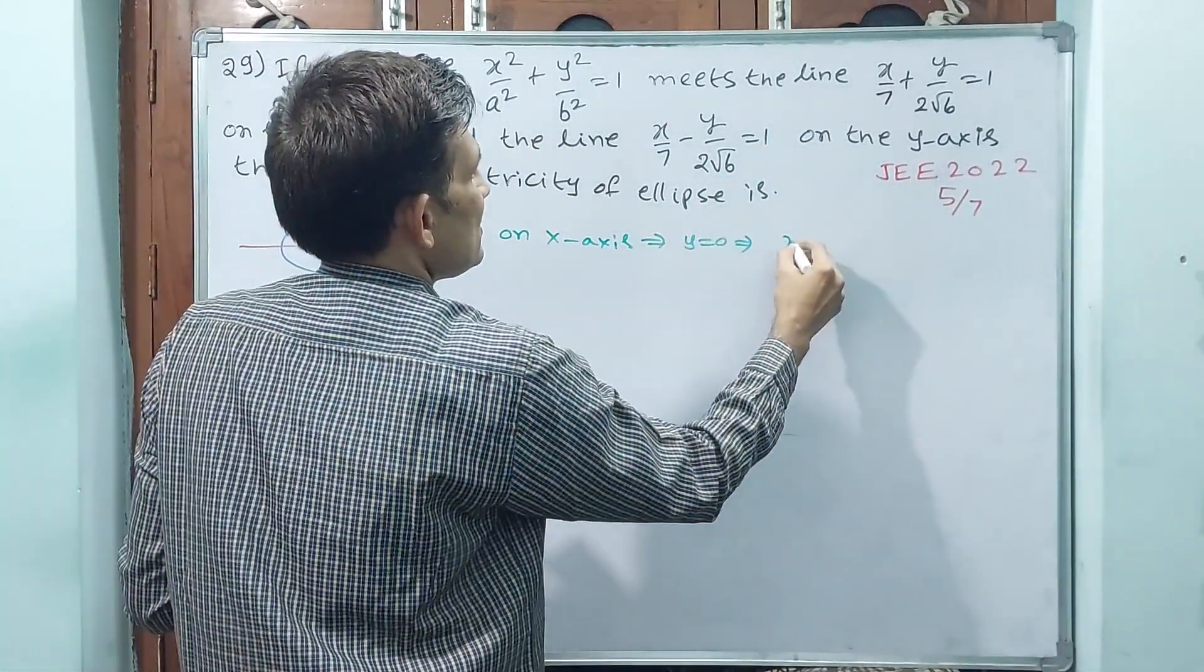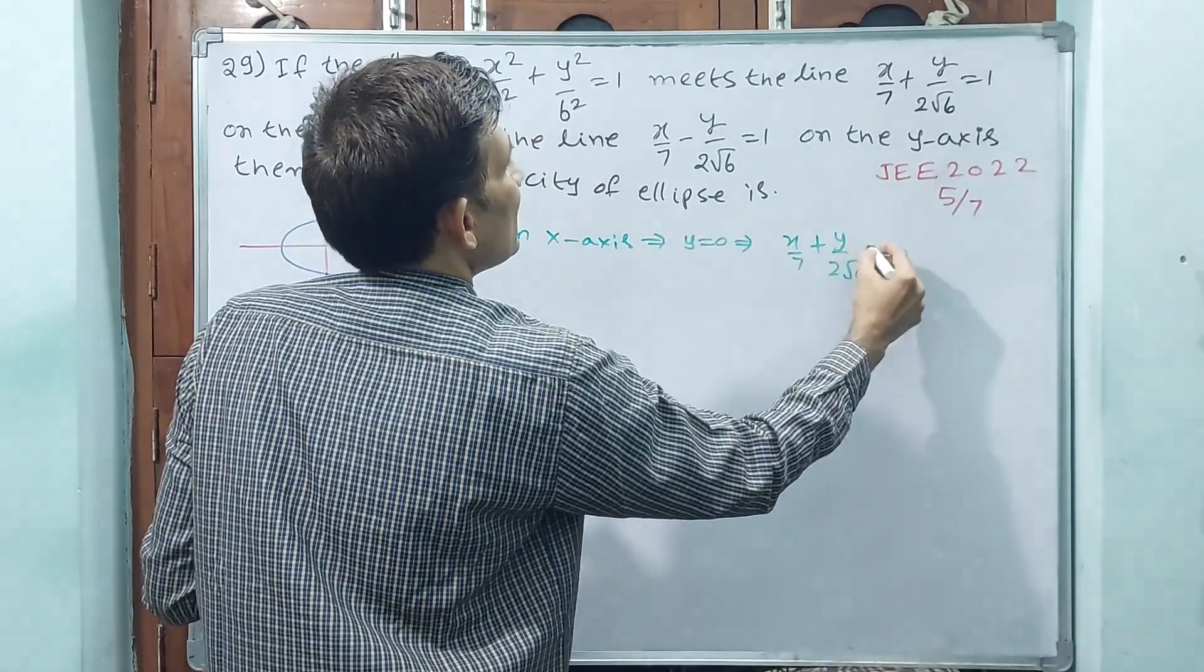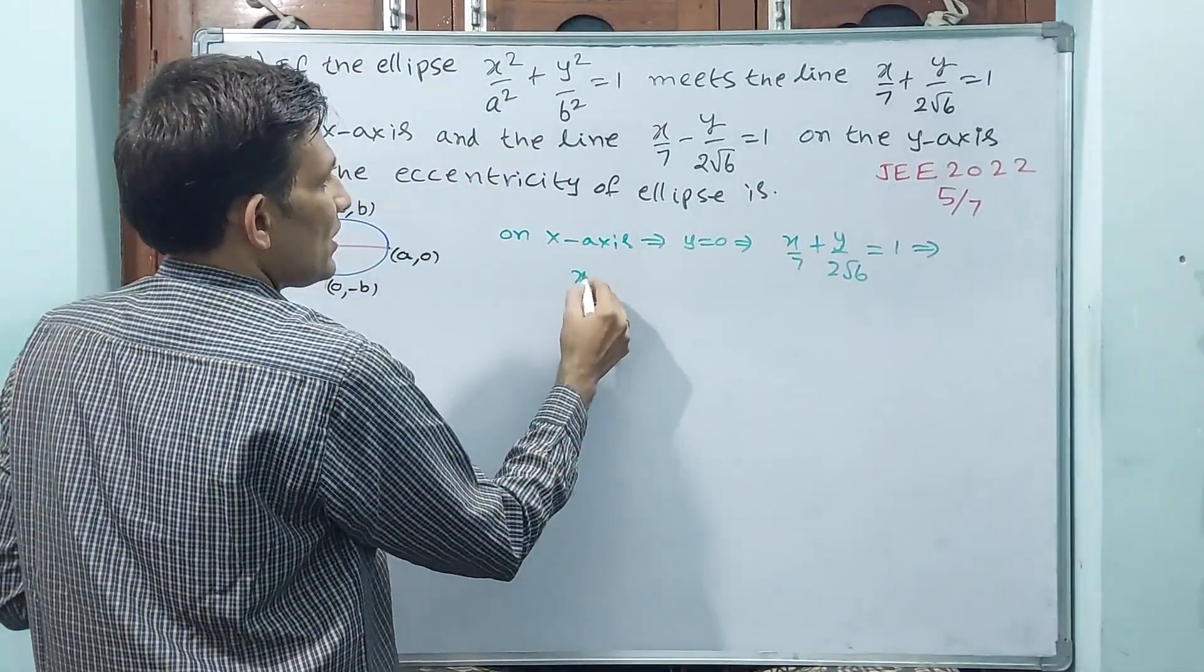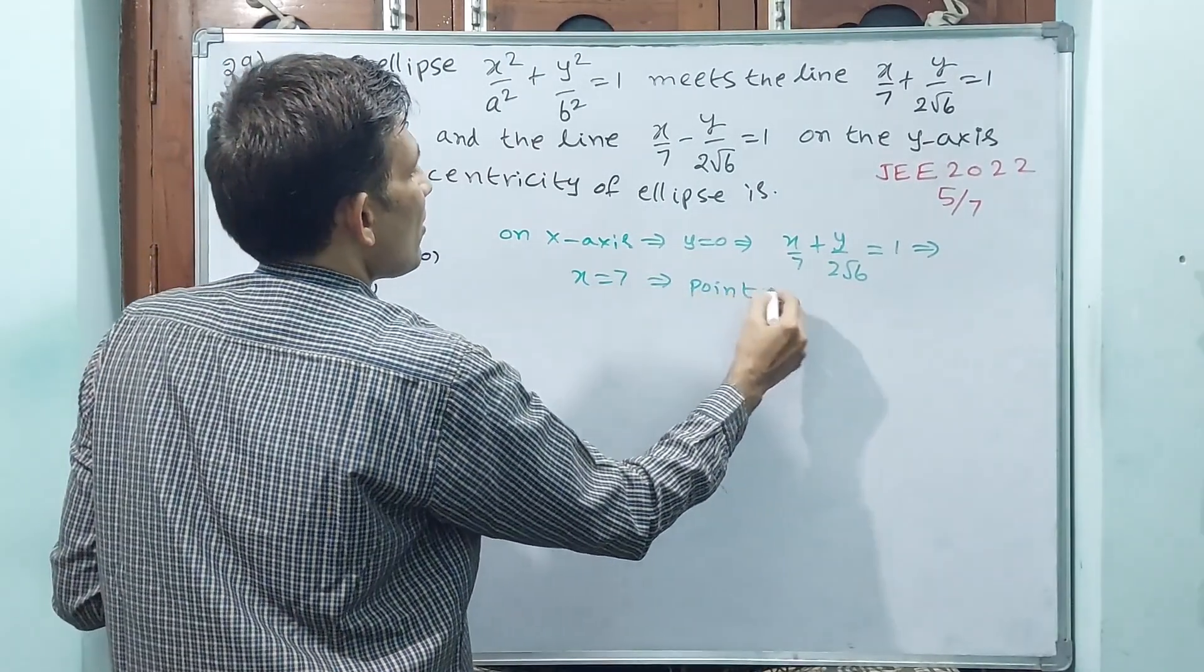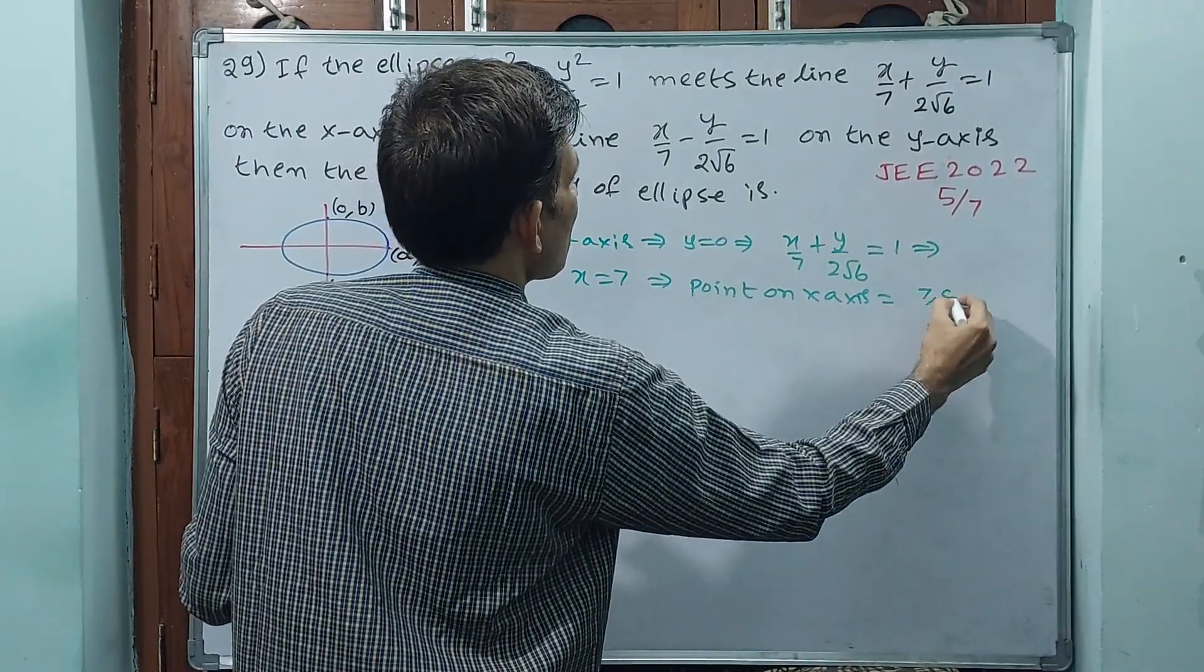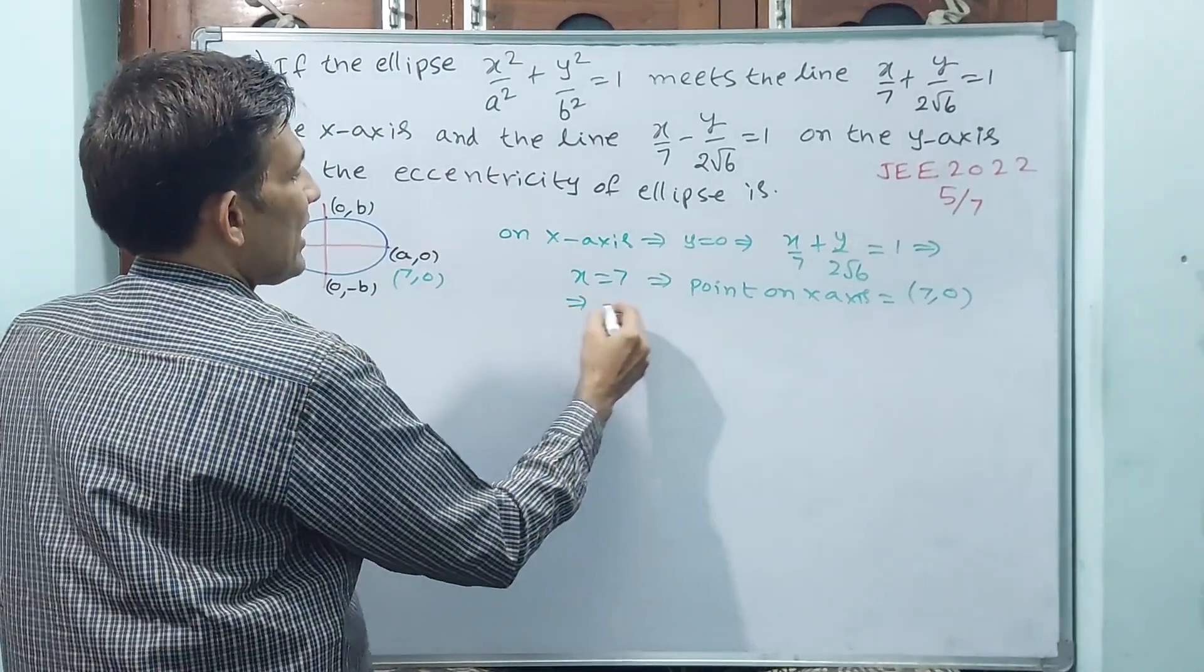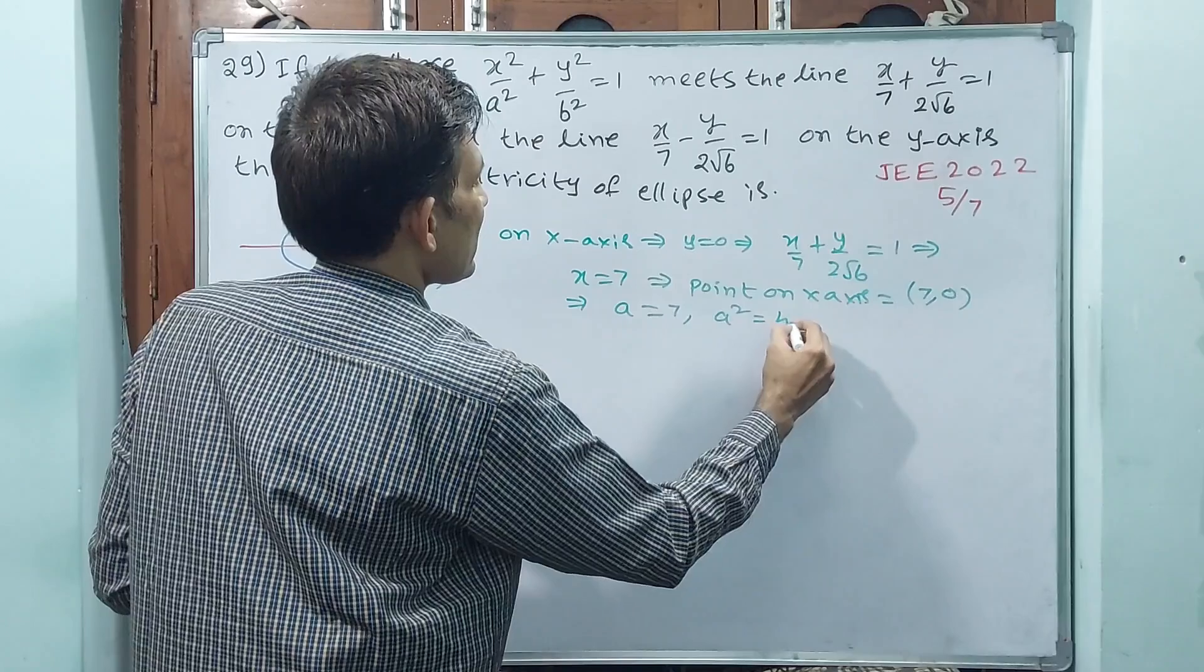First equation on x-axis, that means x/7 + y/(2√6) = 1 implies y = 0, x = 7. Point on x-axis is (7, 0). This will be (7, 0) implies a = 7, a² = 49.